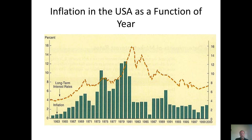When Nixon defaulted on the gold standard, he also put in wage and price controls by executive order, attempting to make it illegal for people to ask for a pay raise or to change prices. With the one exception of oil price controls, this did not last very long — it was clearly untenable. Americans were willing to put up with wage and price controls during World War II for the war effort, but they would not put up with the same in the 1970s. So Nixon gave up trying to outlaw inflation.